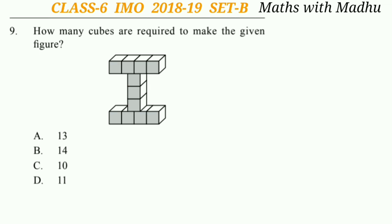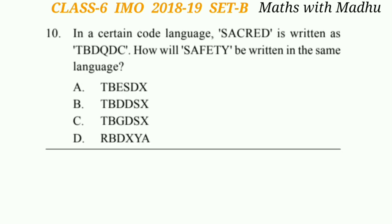Now question 9. How many cubes are required to make the given figure? Look at the figure — there are a total of 11 cubes. So the answer will be option D.